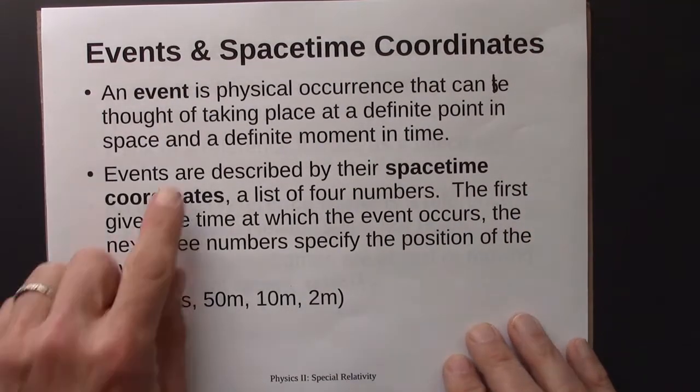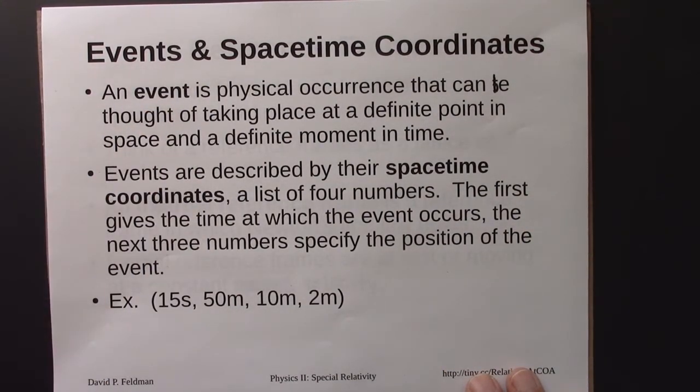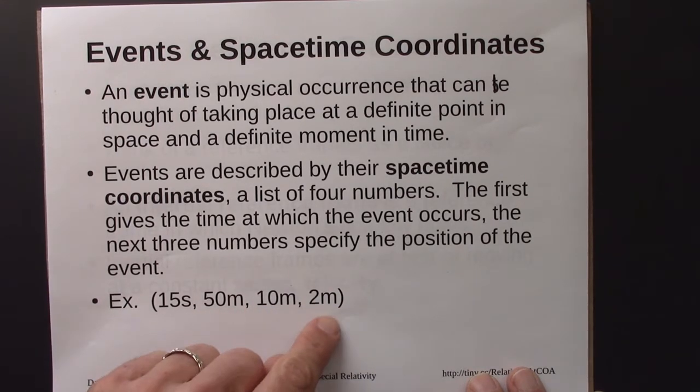The first of those terms is the notion of an event. An event is just some physical occurrence that we can treat as taking place at a definite point in space and a definite moment in time. You describe an event by its spacetime coordinates, and that's just a list of four numbers. The first number is the time at which the event occurs, and the next three would be its location, x, y, and z.